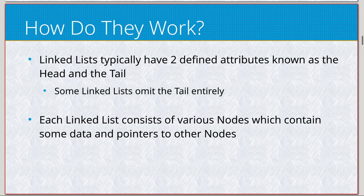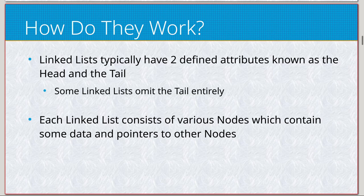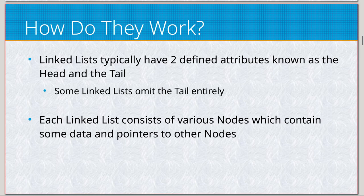So how do linked lists work? At a high level, a linked list has two defined attributes: the head and the tail. Not all of them use a tail, but pretty much every one will use a head — these are essentially the start and end of our list. Every linked list is constructed of nodes, which contain some data and point to other nodes. So we have a head node pointing to another node, and so on, until eventually we may point to a tail. The tail indicates there is an endpoint.